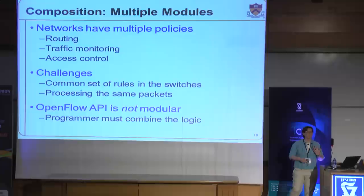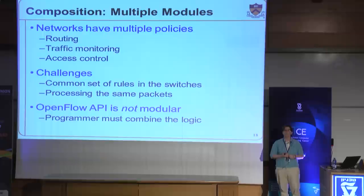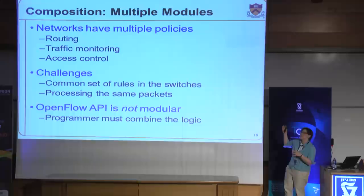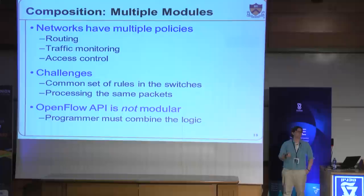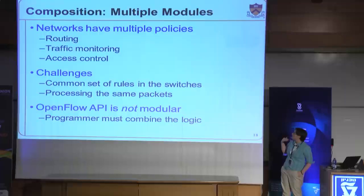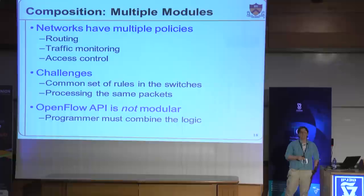That leads to the need for some form of composition, which is the next thing we have in Frenetic. The programmer knows what's going on in the network and wants to affect change in the underlying behavior — computing new paths when a link fails, traffic monitoring, access control policy, server load balancing, and so on. All these different modules may need to run at the same time. The problem is in the end they're all sharing the exact same state in the switch, not unlike sharing registers when programming in assembly language. We would like to write these things separately and let the runtime system arbitrate use of the shared resource, ensuring that if a single packet needs to be handled by more than one module, the underlying rules correctly reflect that.